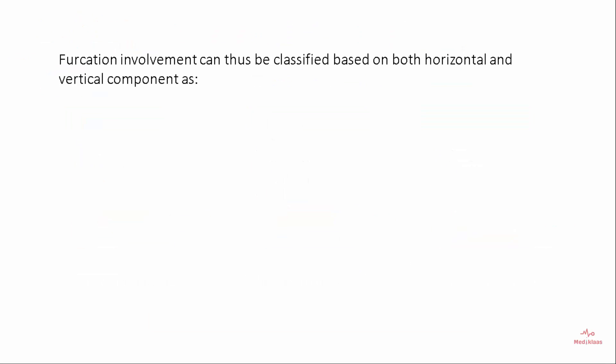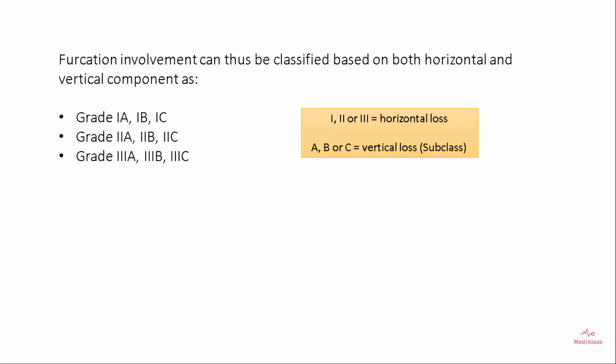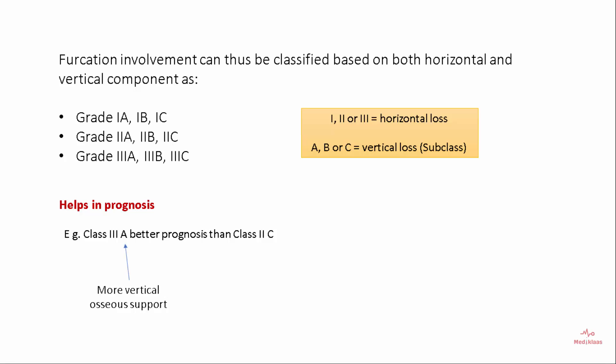Furcation involvement can be classified on both horizontal and vertical components as Grade 1A, 1B, 1C, Grade 2A, 2B, 2C, and Grade 3A, 3B, and 3C, where 1, 2, or 3 represents the horizontal loss and A, B, C represents the vertical loss. This helps in prognosis. For example, Class 3A will have a better prognosis than Class 2C because Class 3A has more vertical osseous support.